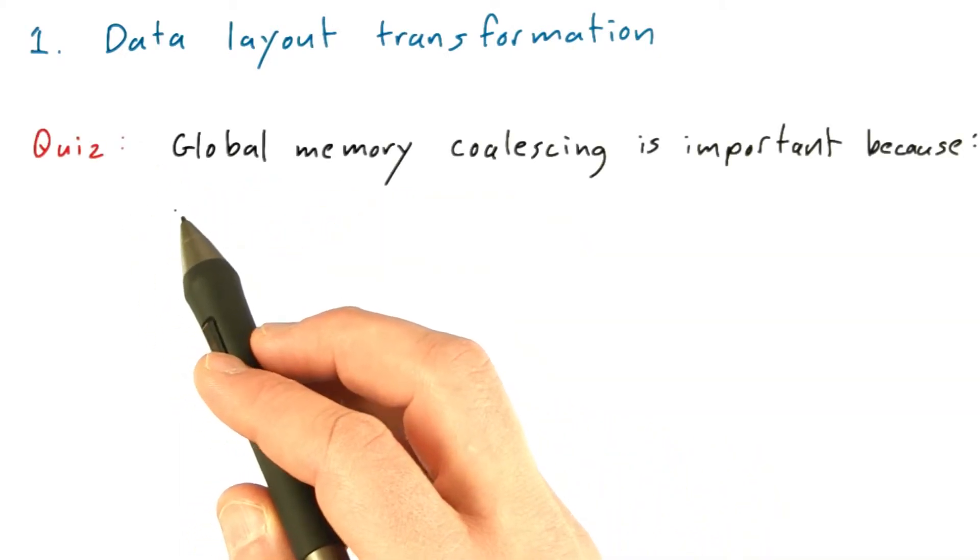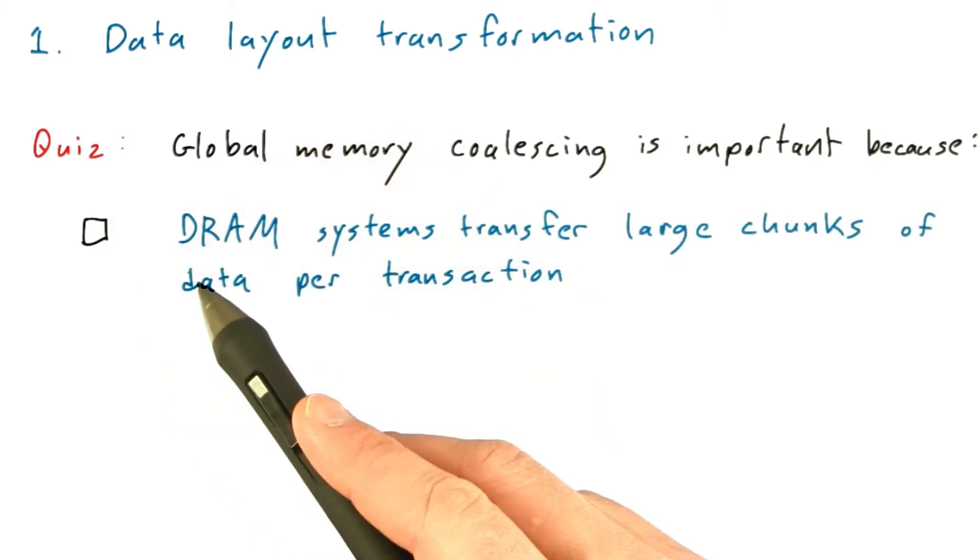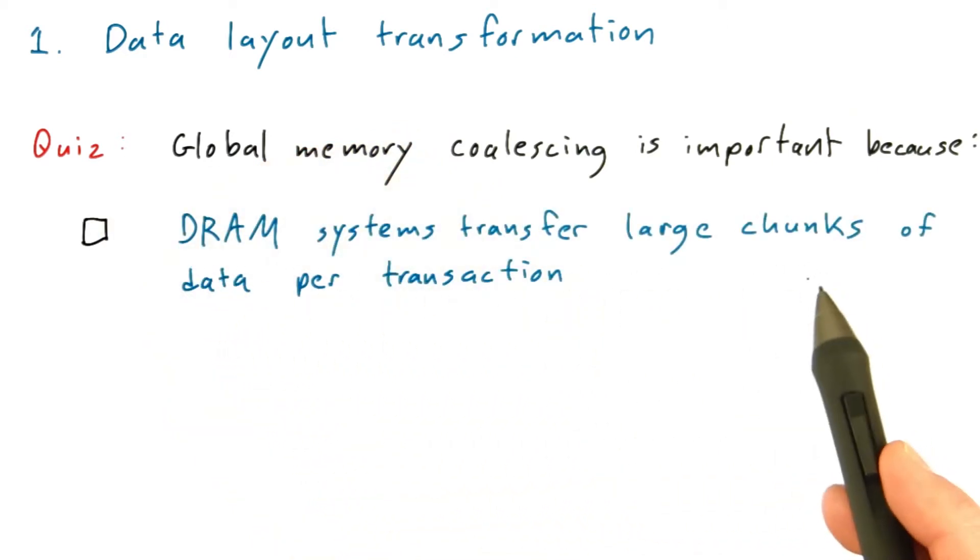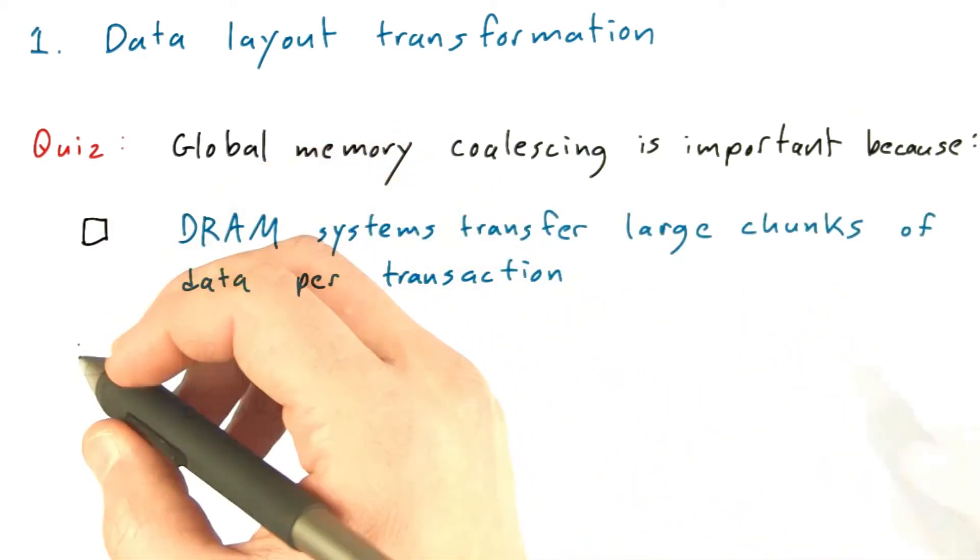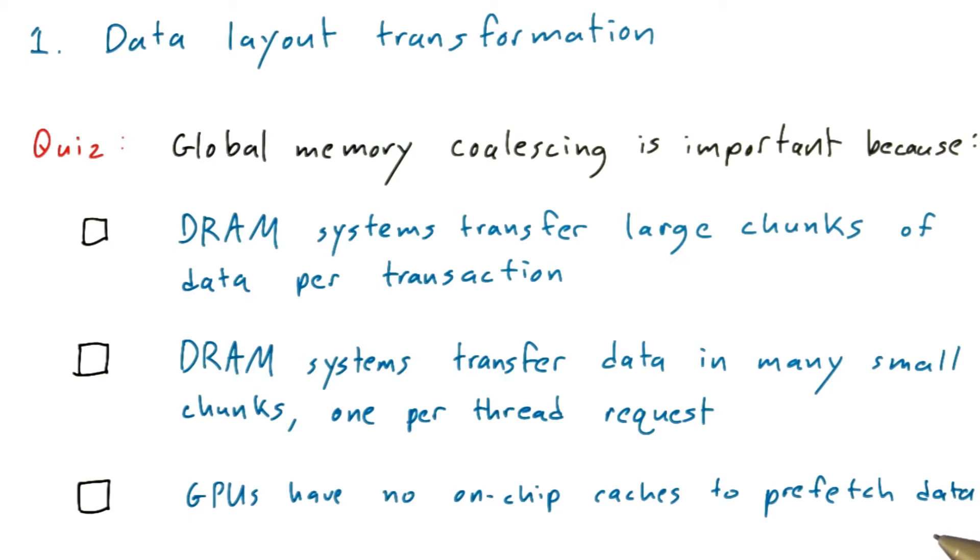As a quick review, global memory coalescing is important because modern DRAM systems transfer large chunks of data per transaction, because modern DRAM systems transfer data in many small chunks one per thread request, or because modern GPUs have no on-chip caches in which to prefetch data, meaning to hold data likely to be used by a thread but not yet actually requested by it.